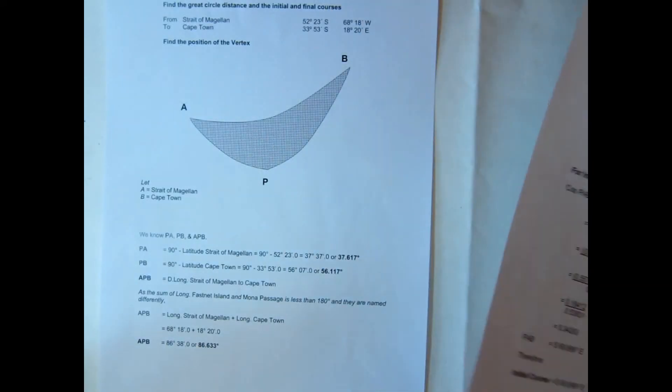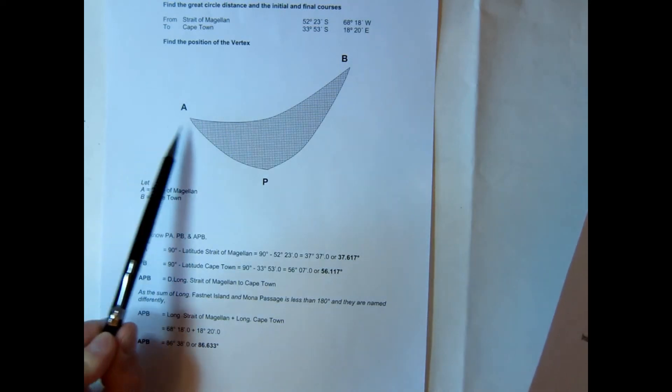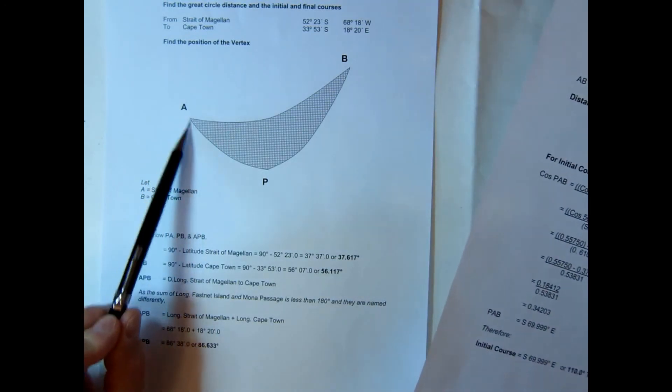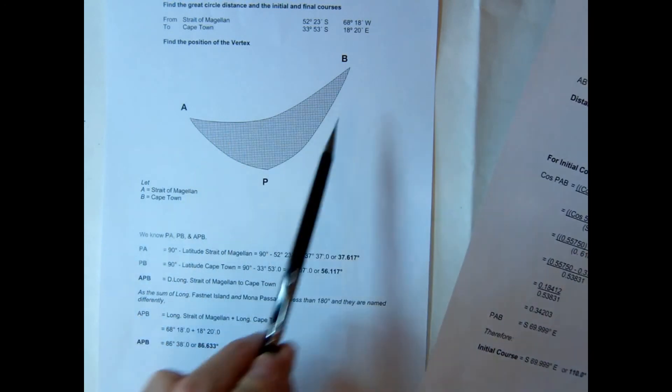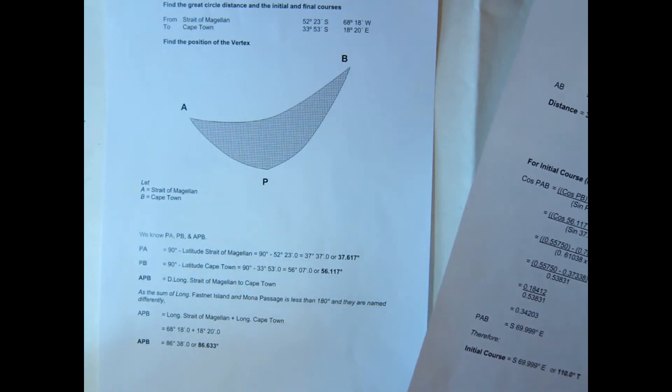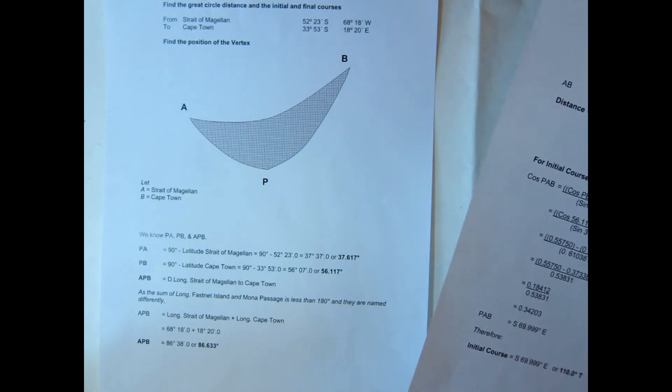Reasonably straightforward to get the distance before we calculate the courses using the formula. Hopefully you can see that our initial course is going to have to be named south east, it's obviously going in a south east direction, and the final course will be named north east.